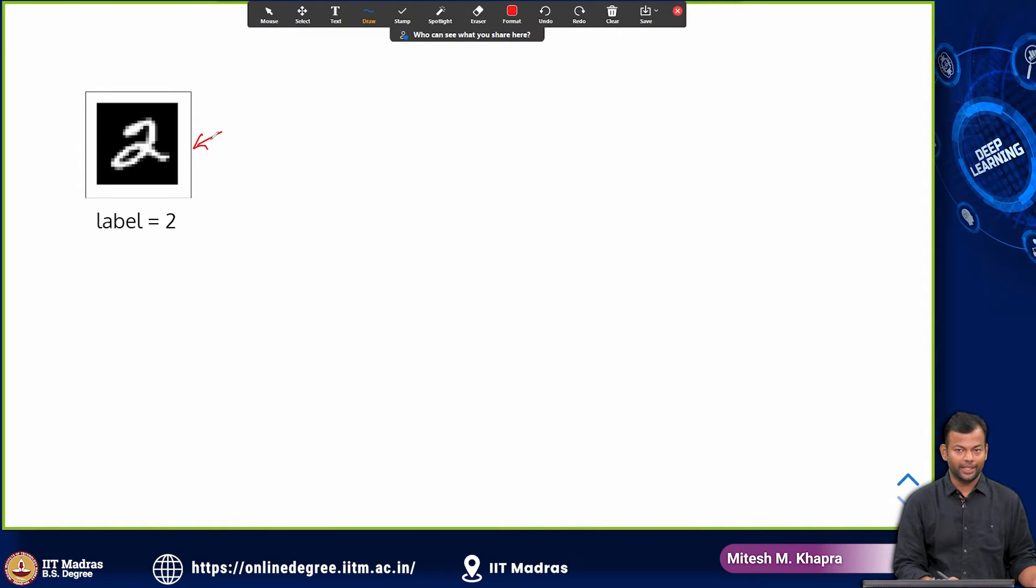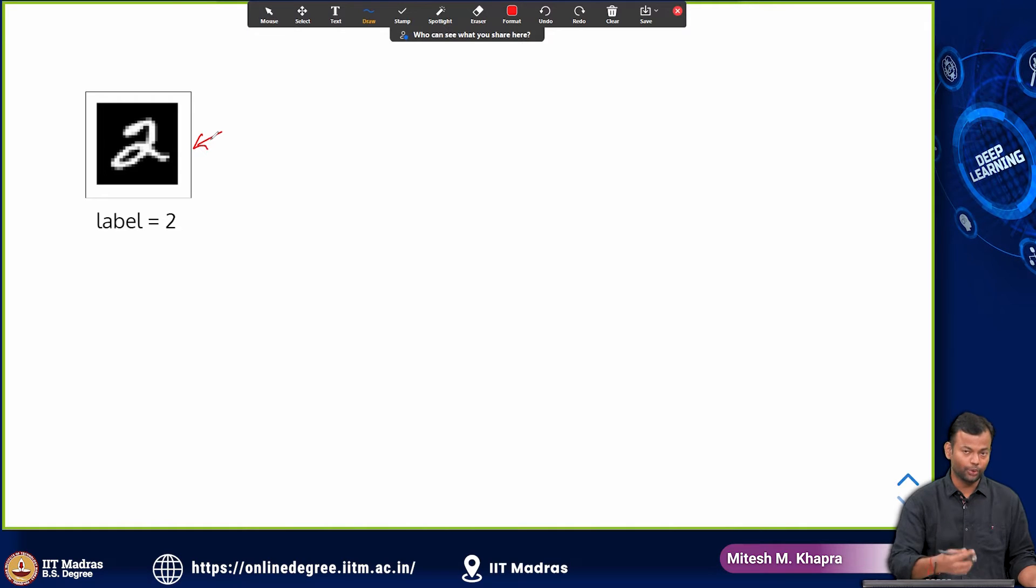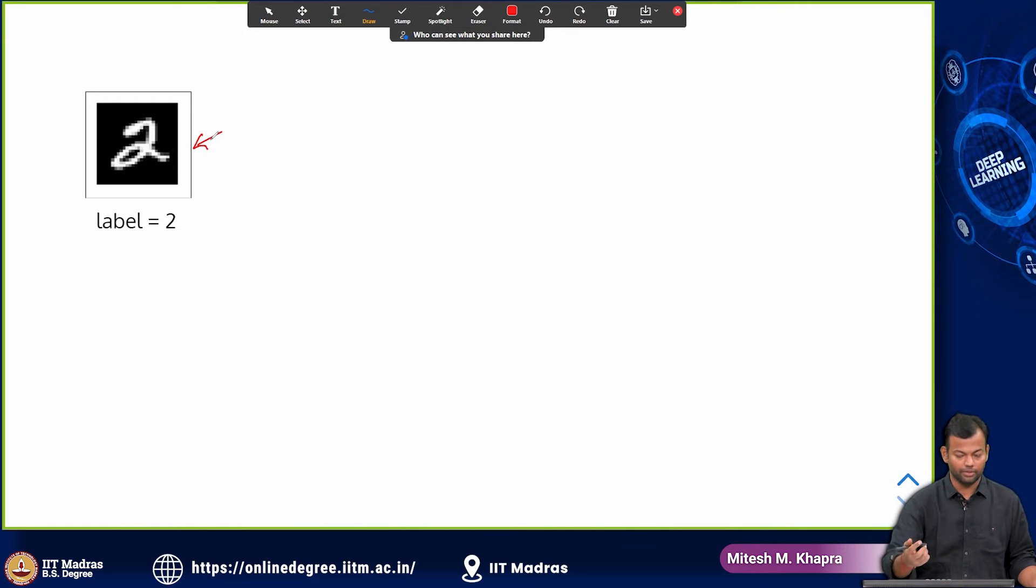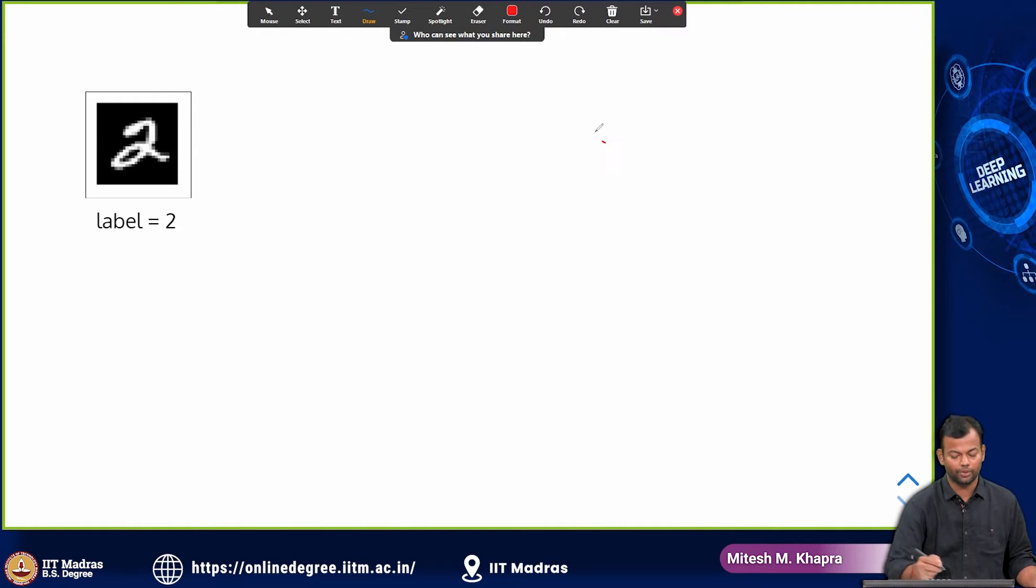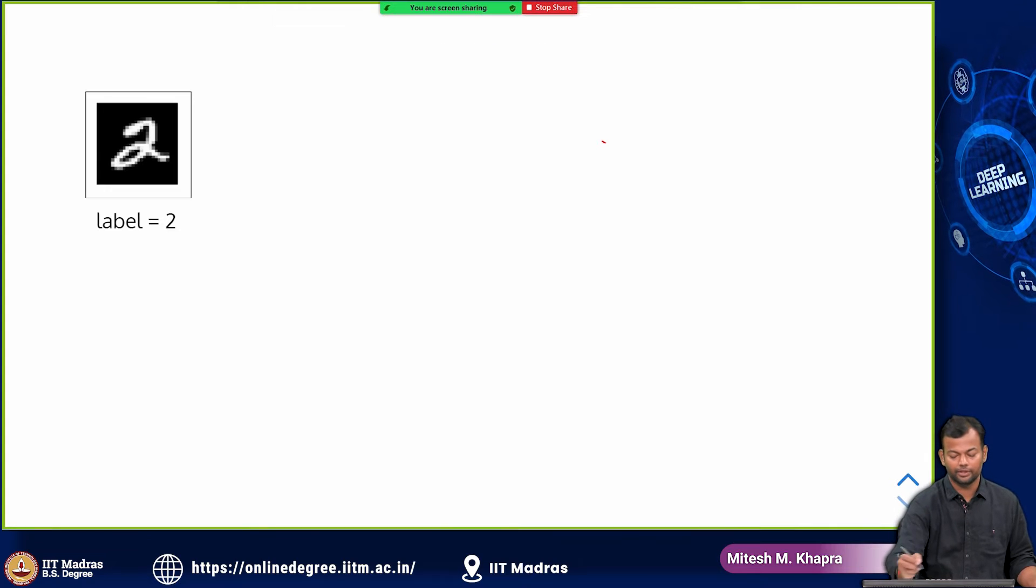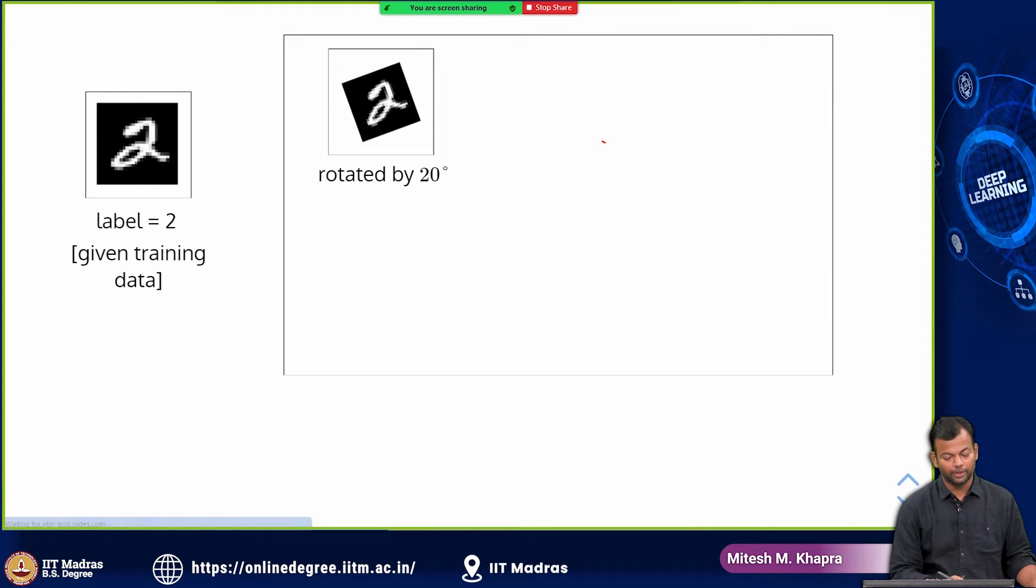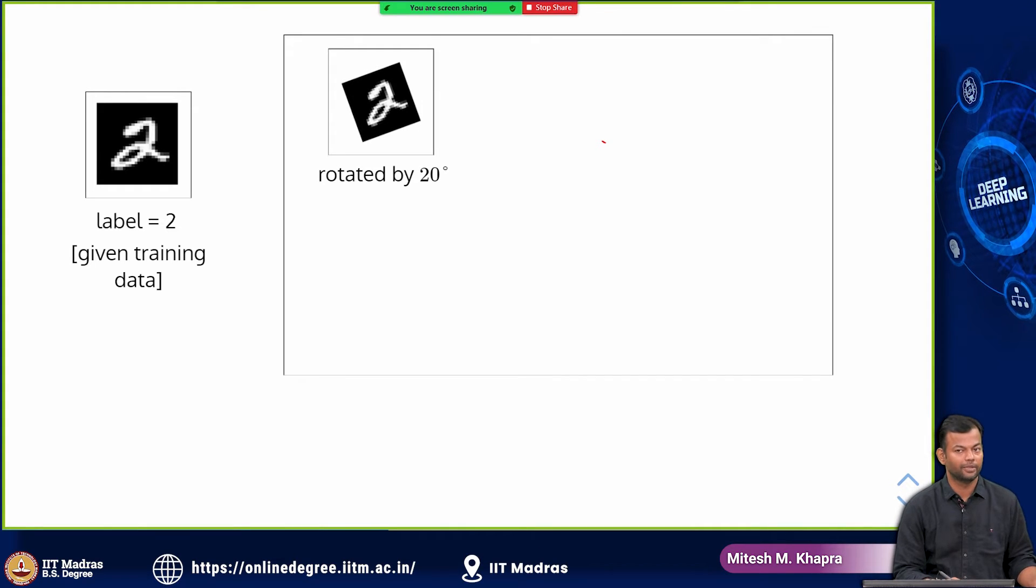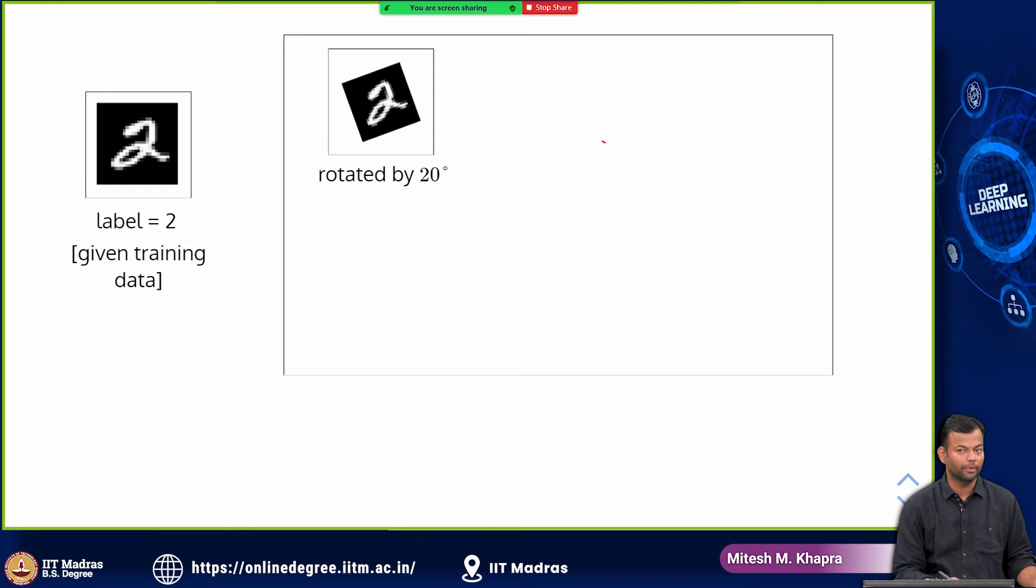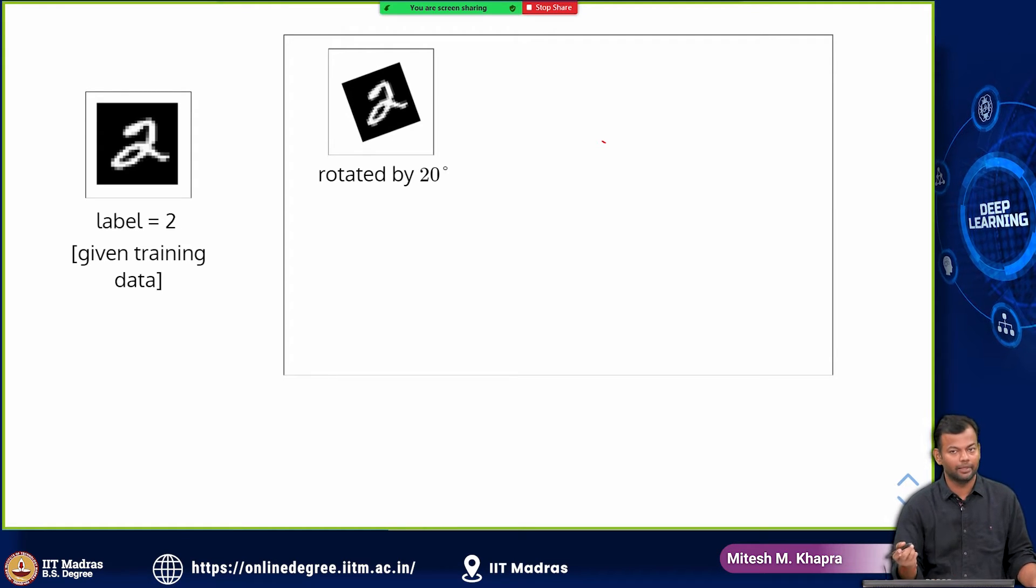Now, what you could do is that from this image you could create some other images. What are the other images you could create? You could define certain transformations. You could rotate this image by 20 degrees and get a new image, and that image the label would still be 2. So you do not need to manually label this.